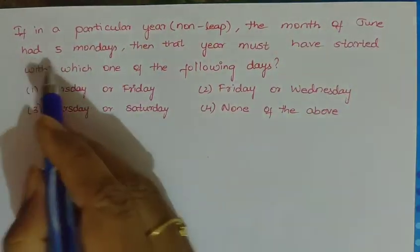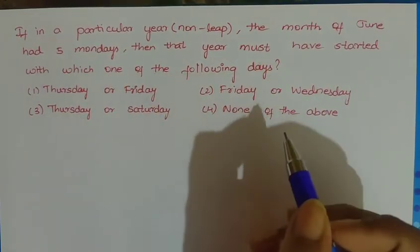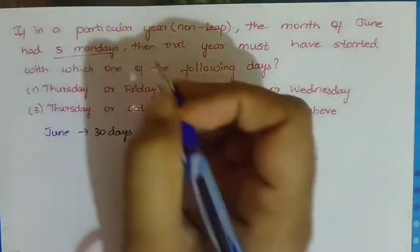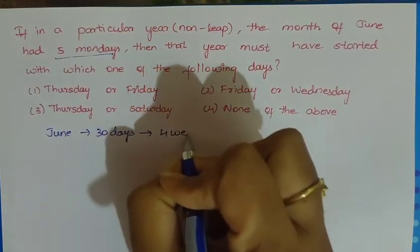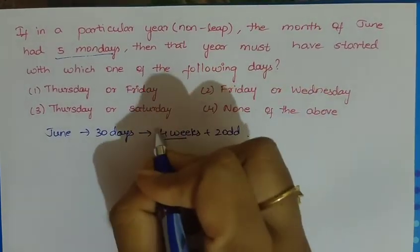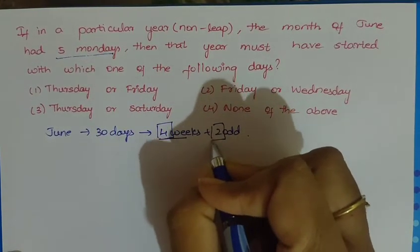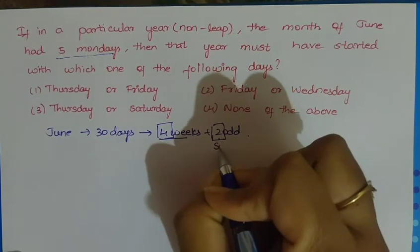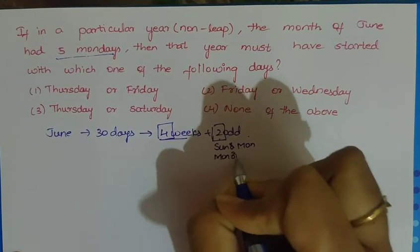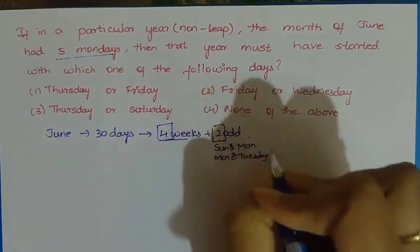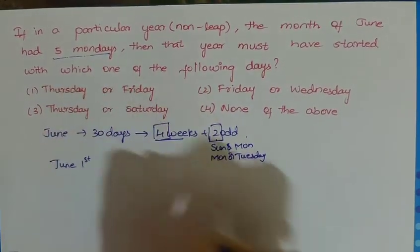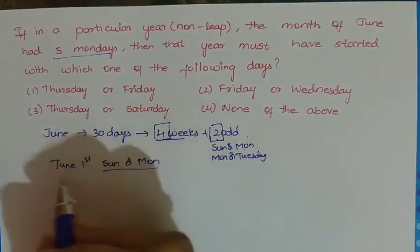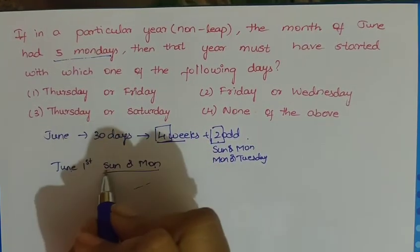If in a particular year the month of June has 5 Mondays, then that year must have started with which day? June has 30 days, which is 4 weeks plus 2 odd days. For June to have 5 Mondays, the 2 odd days must include Monday. So June 1st is either Sunday or Monday.